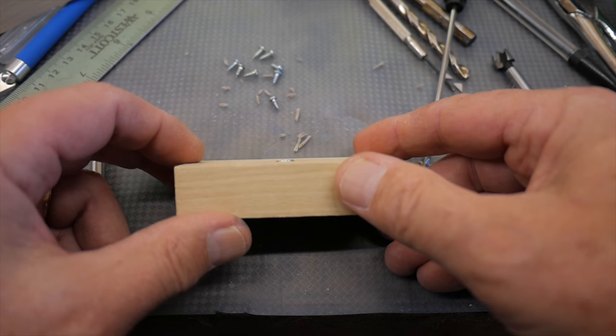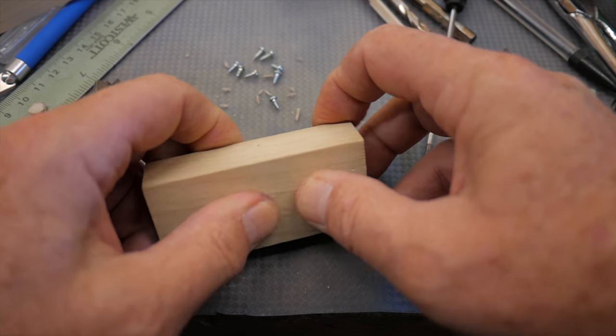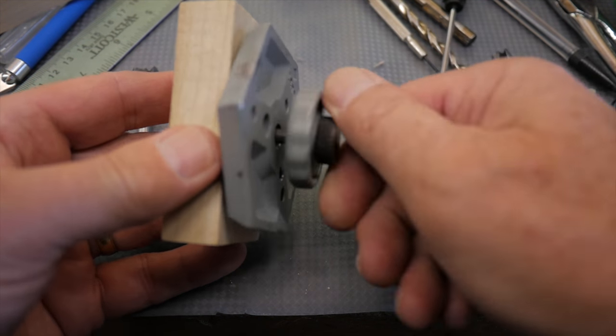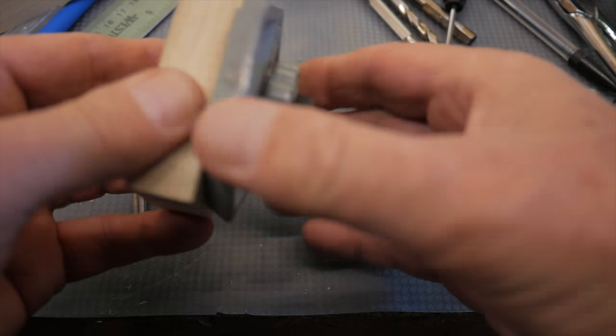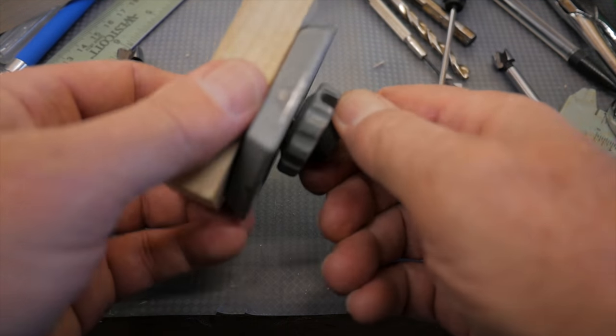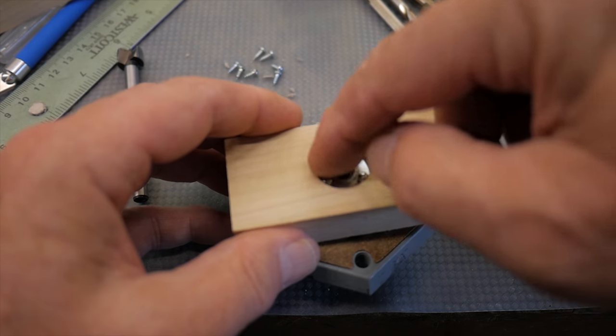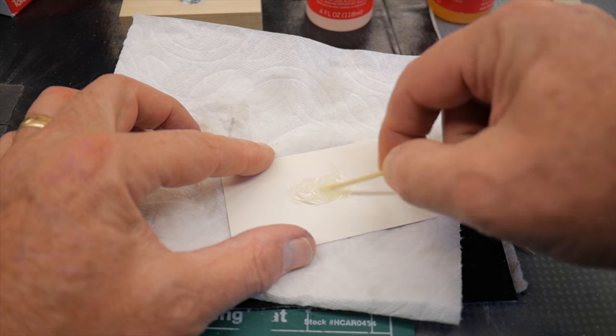So I finished screwing down those little tiny screws in there and it looks like I'm pretty darn flush with my bottom surface of the tripod base where my adapter plate will mount to, like that. Nice and secure, nice and tight.